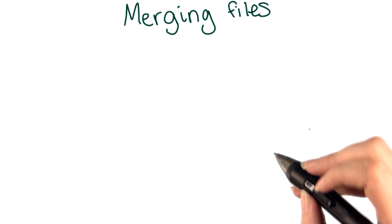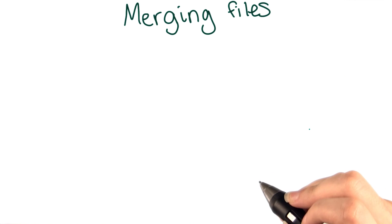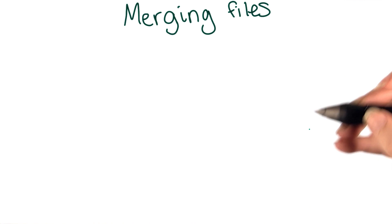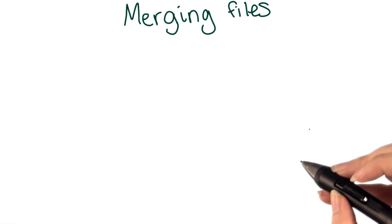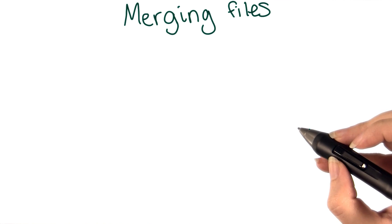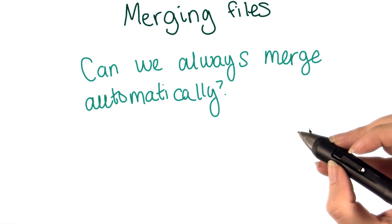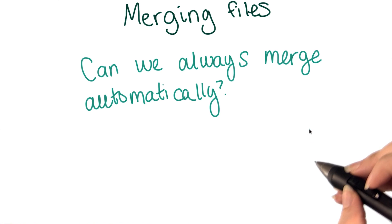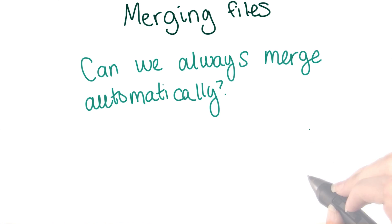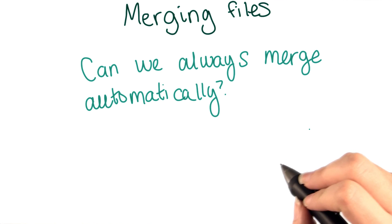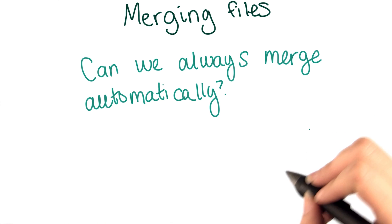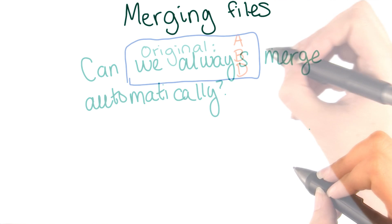Okay, you've now successfully used git to merge some branches. At this point, you might be wondering whether git can always automatically determine how to merge branches. Let's think this through by taking a look at another simple example.